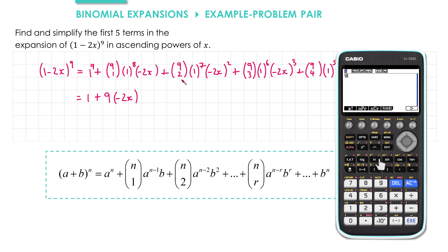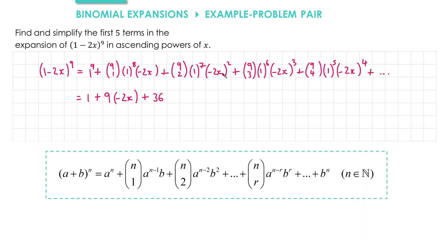9 choose 2, probably need our calculator for that. We get 36. And minus 2x all squared gives us positive 4x squared.